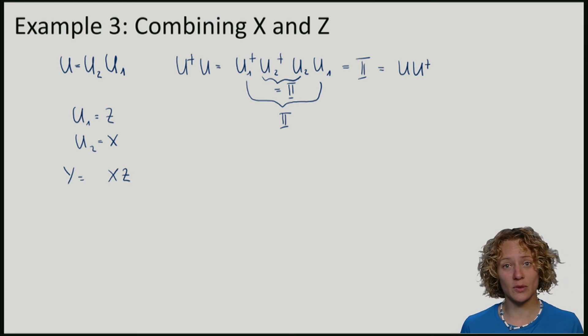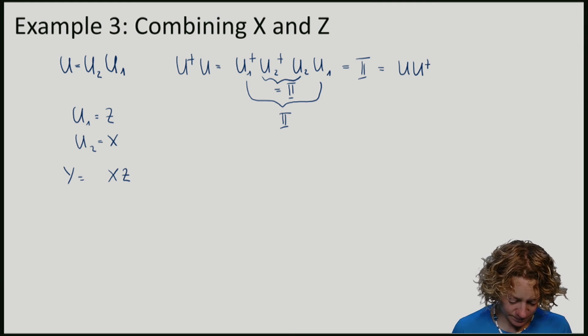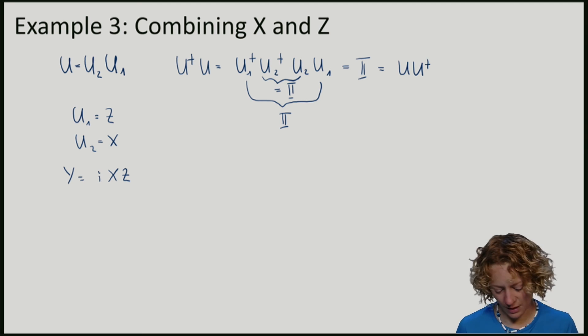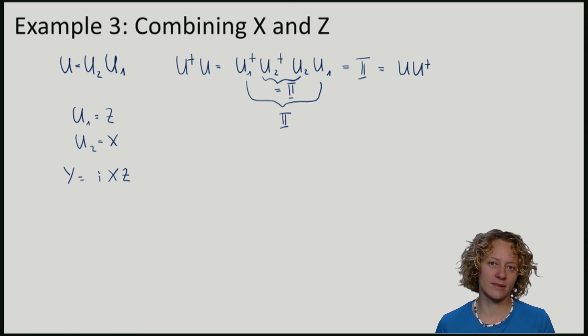Sometimes we will also put an i in front of the X times Z. What effect does this new unitary, the operator Y, have on the standard basis? It consists of X and Z, and we already know what these individually do to the standard basis.